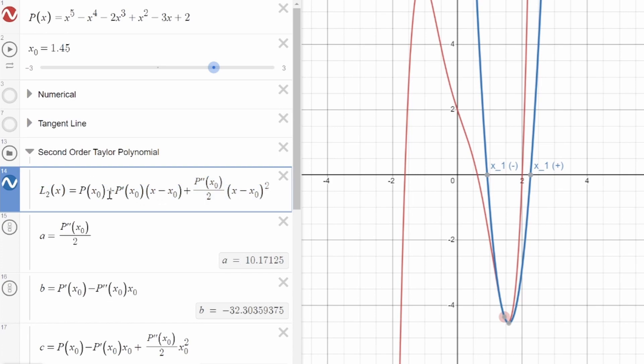In this case, not only are you using the function and its first derivative, but you're also making use of its second derivative. And by doing that, you can construct this second order Taylor polynomial, which very closely approximates the original polynomial at any given point.